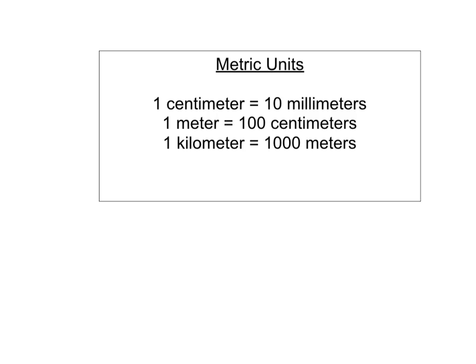These are the metric unit conversions that we'll be using in today's lesson. 1 cm equals 10 mm, 1 m equals 100 cm, 1 km equals 1,000 m. There will be a reference cheat sheet on each of the pages, so you'll be able to refer back to that. You don't need to memorize these.